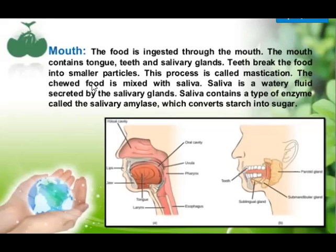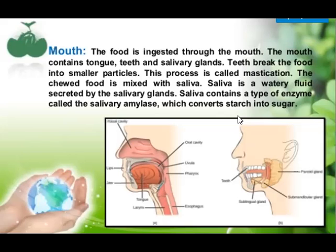The chewed food is mixed with saliva. Saliva is a watery fluid secreted by the salivary gland — it is a digestive juice which helps in the process of digestion. Saliva contains a type of enzyme called salivary amylase, which converts starch into sugar. Starch is the complex form of carbohydrate and sugar is the simple soluble form of carbohydrate.